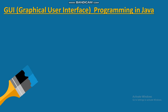Before that, let's revise what is meant by command line interface. In a command line interface, from the console we type some commands. These commands are executed by the system and the system runs. For example, to run a Java program, we use the command line.